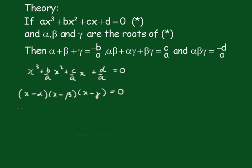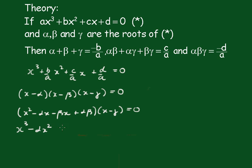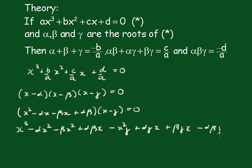Taking the first two brackets: (X - alpha)(X - beta) = X² - alpha·X - beta·X + alpha·beta. Then multiplying by (X - gamma) we get X³ - alpha·X² - beta·X² - gamma·X² + alpha·gamma·X + beta·gamma·X - alpha·beta·gamma = 0.